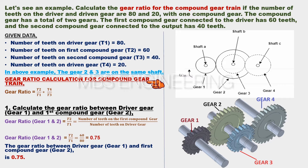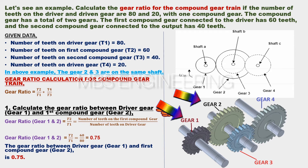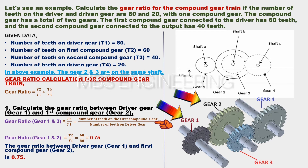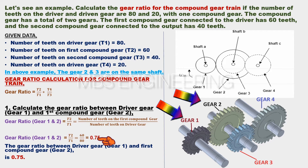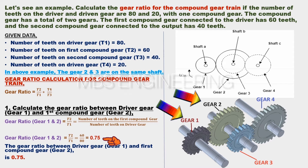We calculate the gear ratio for the compound gear train. First, we calculate the gear ratio between the driver gear (gear 1) and the first compound gear (gear 2). Gear ratio for gears 1 and 2 equals T2 divided by T1, which is 60 divided by 80. Therefore, the gear ratio for gears 1 and 2 equals 0.75.